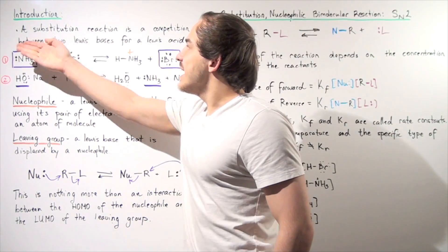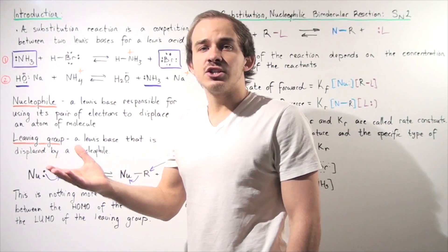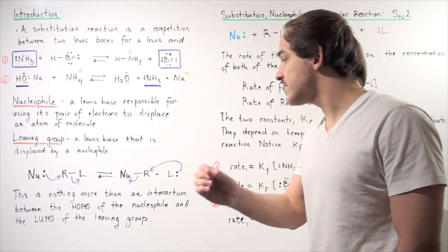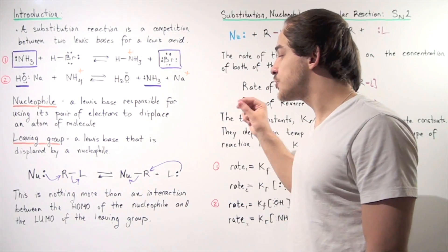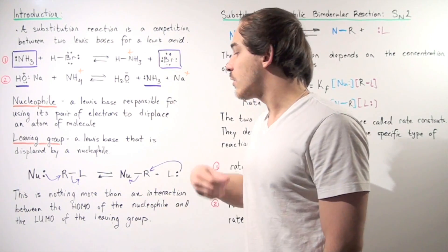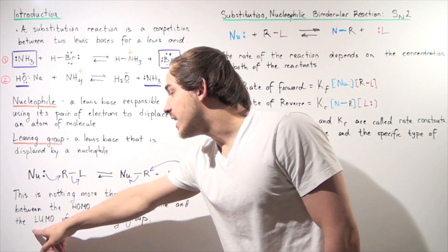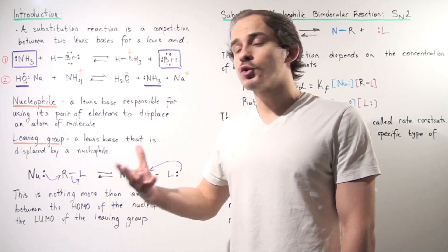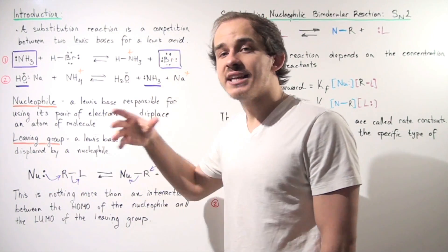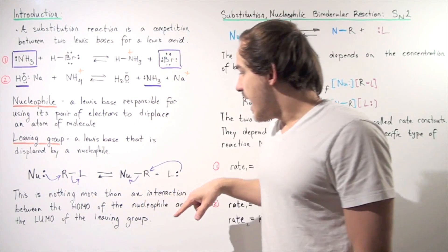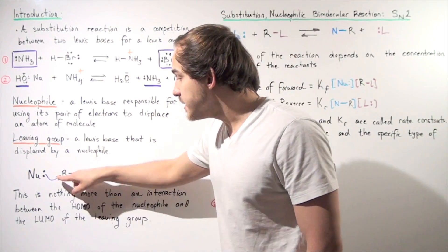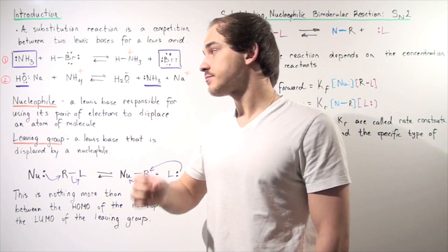Once again, a substitution is nothing more than a Lewis acid-base reaction. A Lewis acid-base reaction is nothing more than an interaction between the highest occupied molecular orbital (HOMO) of our nucleophile and the lowest unoccupied molecular orbital (LUMO) of our leaving group compound. This lone pair of electrons found on our non-bonding orbital is our HOMO, and this anti-bonding molecular orbital found on this compound is our LUMO.